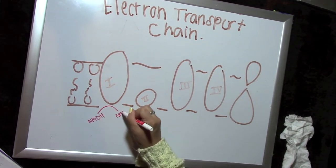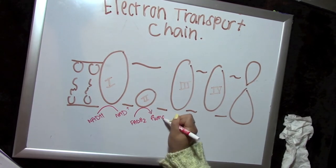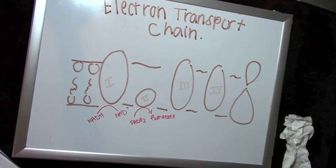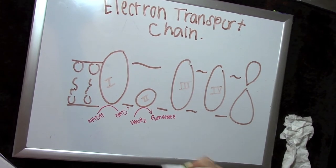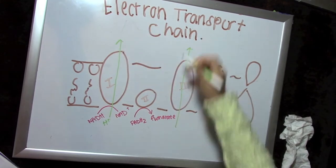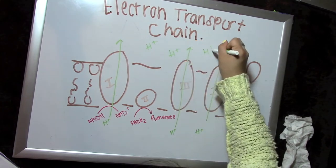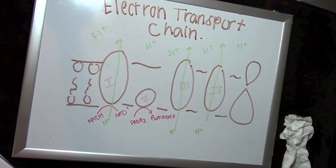What these complexes do is they take those electron carriers, which I hope you remember before—the NADH and the FADH2. When they are converted into NAD plus and fumarate, they release H pluses, which are protons, and electrons. These protons are carried across this membrane through the complexes, which causes a surplus of hydrogen on the left side or on the upper side of the plasma membrane.